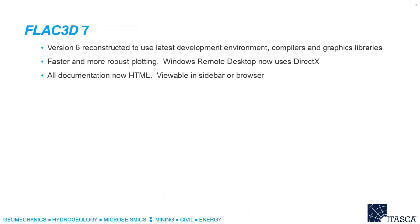FLAC 3D 7 — what we did is we took FLAC 3D version 6 and more or less rebuilt it using modern tools: the latest compilers, the latest development environment, and the latest graphic libraries. This has led to faster and more robust plotting, more stable plotting on Windows Remote Desktop, and generally all-around better behavior. The other thing that's new in FLAC 3D 7 is that all the documentation is now HTML, so you can view it in a browser like Chrome or Firefox and use capabilities like searching.